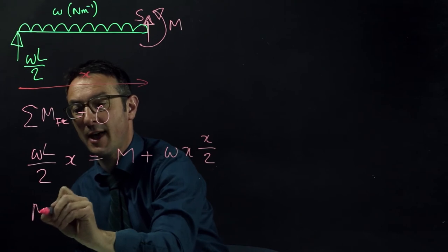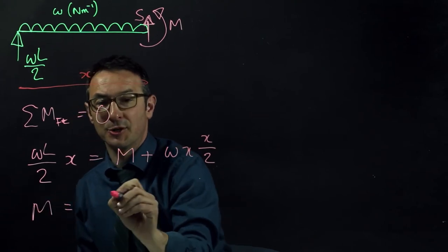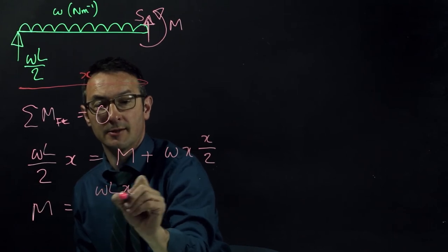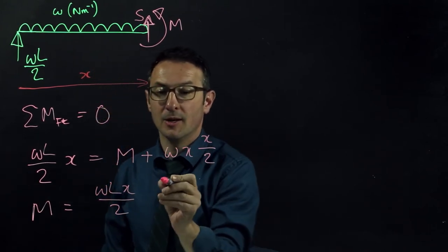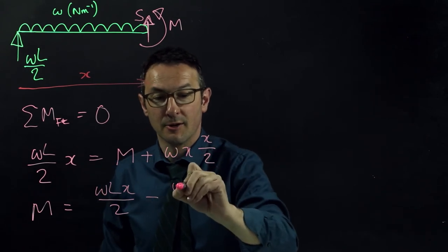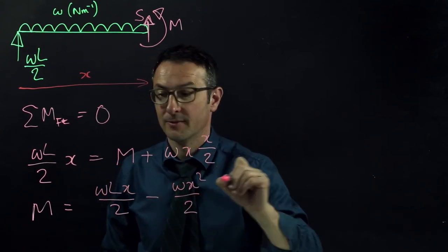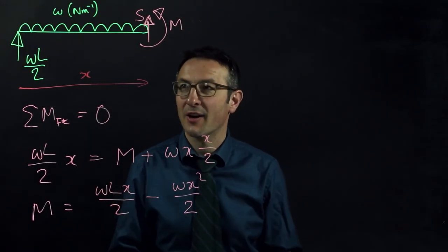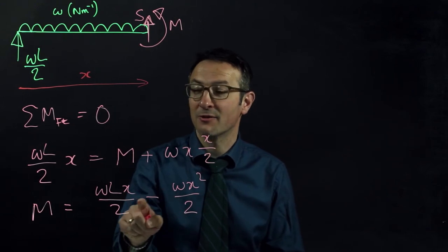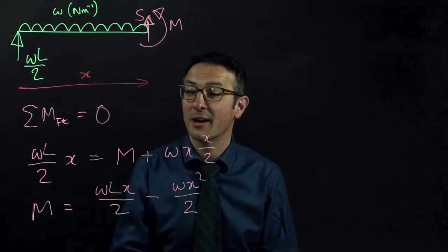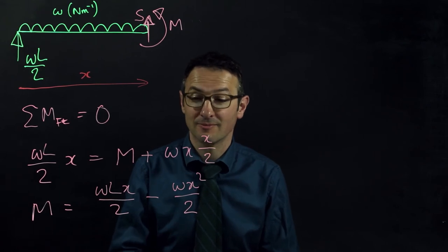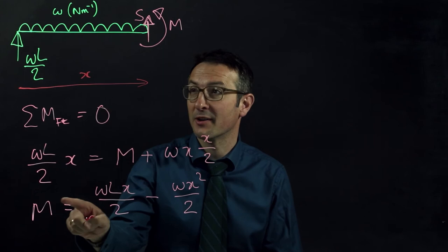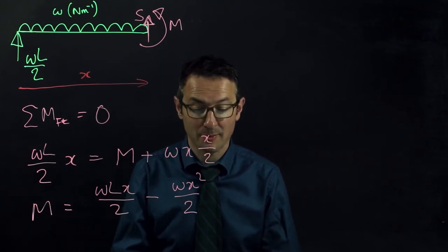So we can rearrange that to get the equation for M, which is equal to WLx over 2 minus Wx squared over 2. So this is our equation for M anywhere in the beam. We could put in any value of x and find out what the value of M is anywhere in the beam. When x is 0, we can see that M is 0. When x is L, we'll also find M is 0, and that's good news because that's what we would expect.